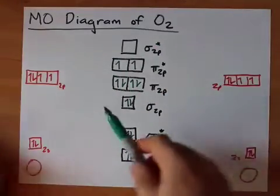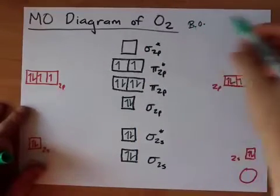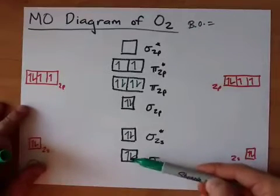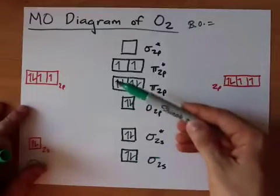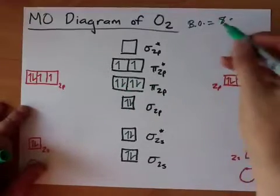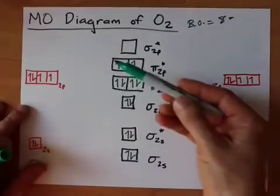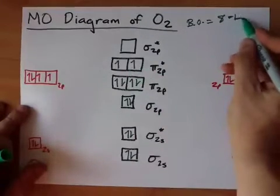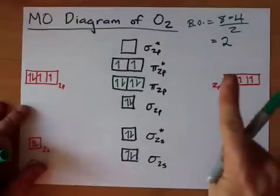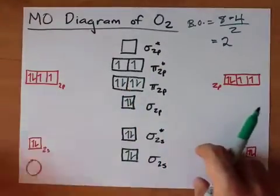So, the bond order of O2, by the way, bond order is going to be the number of electrons in bonding orbitals. That's 1, 2, 3, 4, 5, 6, 7, 8 minus the number of electrons in antibonding orbitals. That's 1, 2, 3, 4 divided by 2, which gives me 4 divided by 2, which is a bond order of 2, aka a stable double bond between the two atoms.